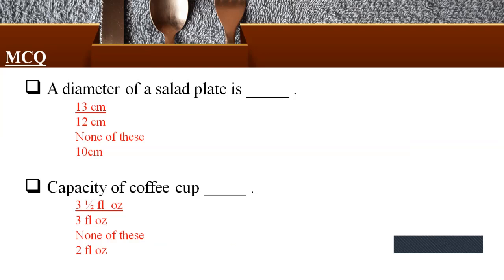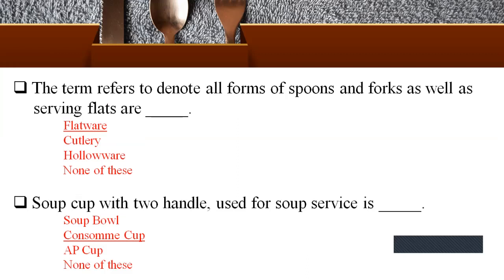Multiple choice questions. The diameter of a salad plate is how much? The choices are 13 centimeters, 12 centimeters, none of these, or 10 centimeters. The answer is 13 centimeters. The capacity of a coffee cup: 3 and a half fluid ounce, 3 fluid ounce, none of these, or 2 fluid ounce. The answer is 3 and a half fluid ounce. The term that refers to all forms of spoons and forks as well as serving flats is: flatware, cutlery, hollowware, or none of these. The answer is flatware. A soup cup with two handles used for soup service is called: soup bowl, consomme cup, all-purpose cup, or none of these. The answer is consomme cup.